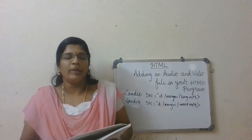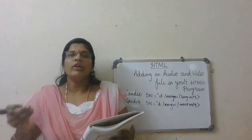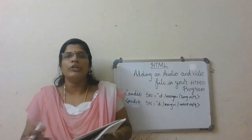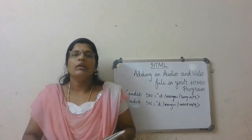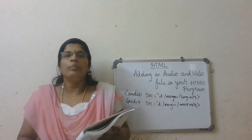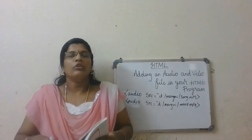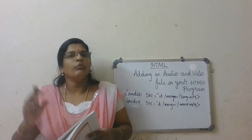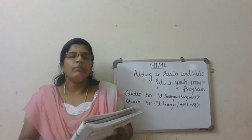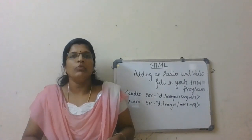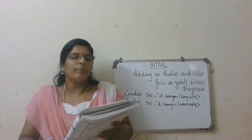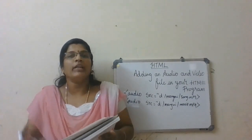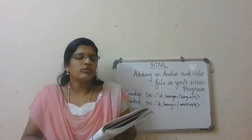The 'controls' attribute displays playback buttons such as pause, forward, and backward. The 'loop' attribute makes the audio or video repeat again and again. The 'muted' attribute puts the media in silent mode. Then there is 'preload', which determines how and when the file should load.